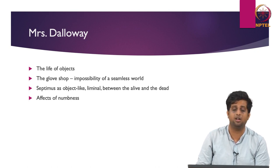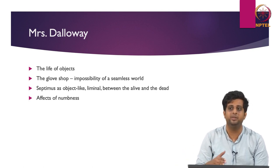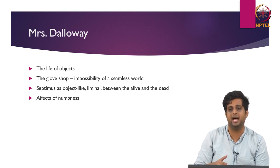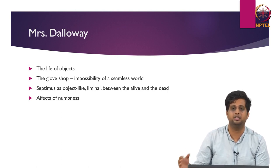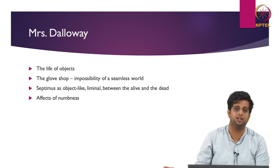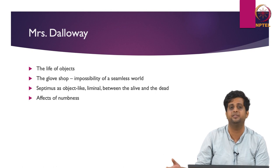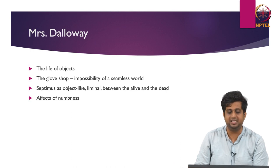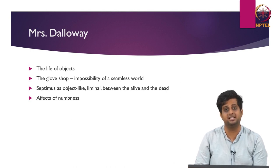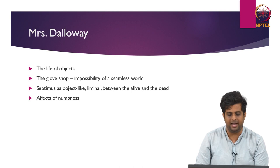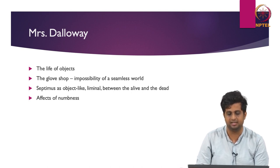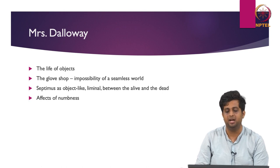When Rezia reaches out for his hand to cross the street, she thinks to herself that she had a right to his arm though it was without feeling. Septimus's anatomy is slowly becoming numb — modernity creates these effects of numbness, of not being able to feel. He was relating himself with trees, slowly becoming like a tree, a kind of liminal existence between what is alive and what is not. We are again brought back to a similarity with The Waste Land, where Professor Pari discussed how human manoeuvres become mechanistic.